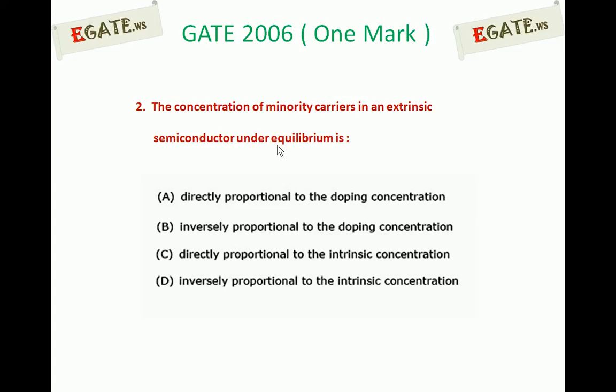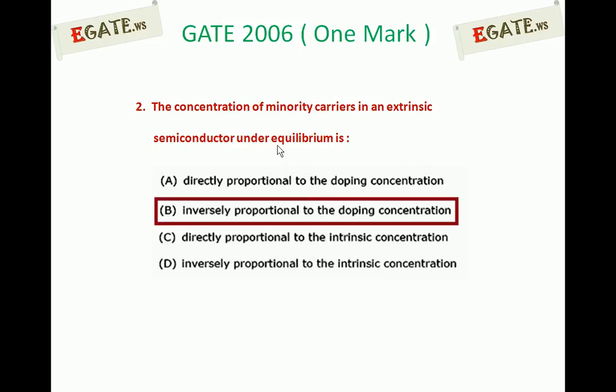Under equilibrium, the concentration of minority carriers in an extrinsic semiconductor — out of these four options, the correct one is: inversely proportional to doping concentration. So, the concentration of minority carriers in an extrinsic semiconductor under equilibrium is inversely proportional to doping concentration.